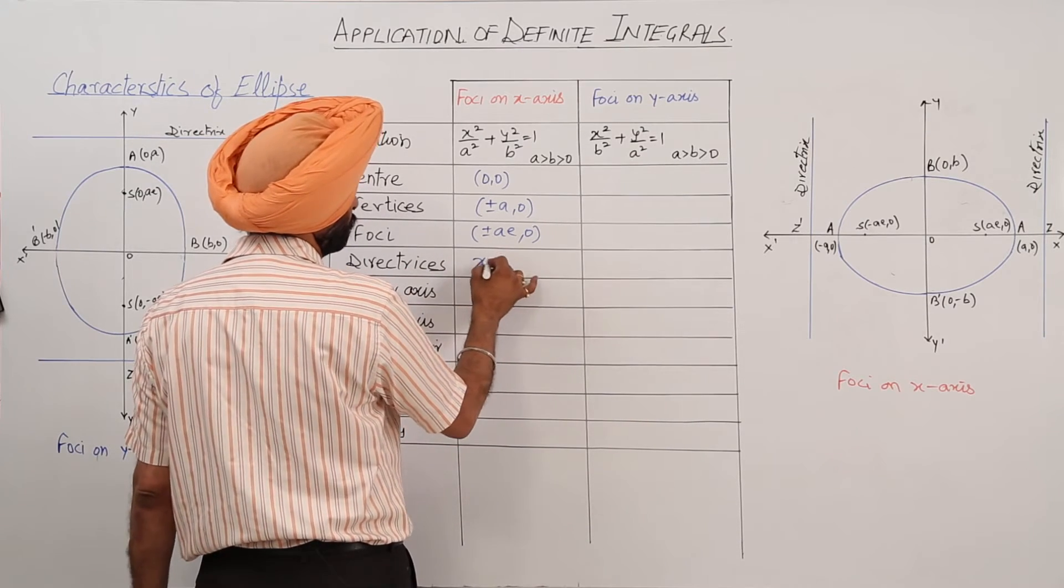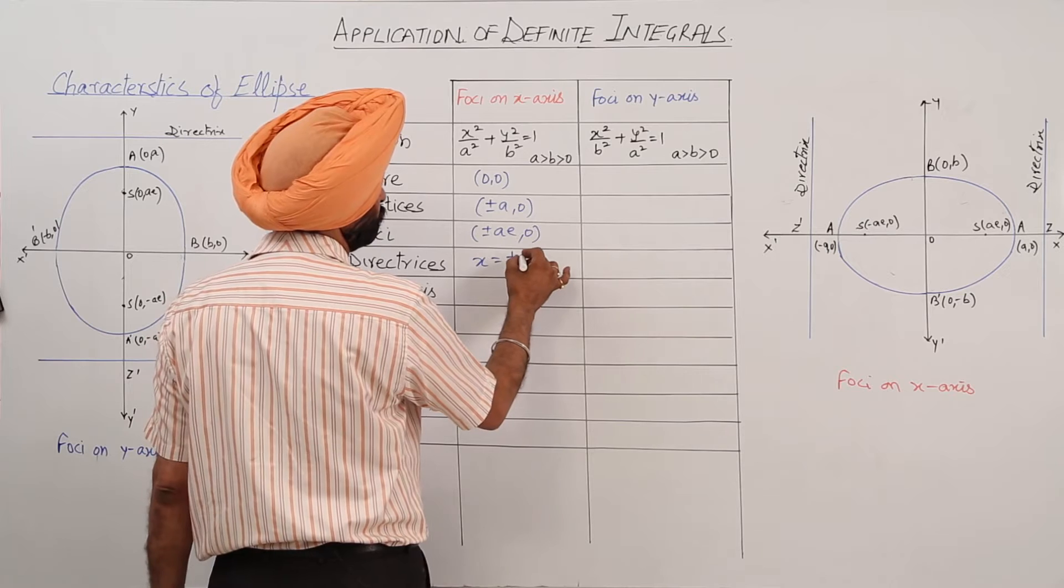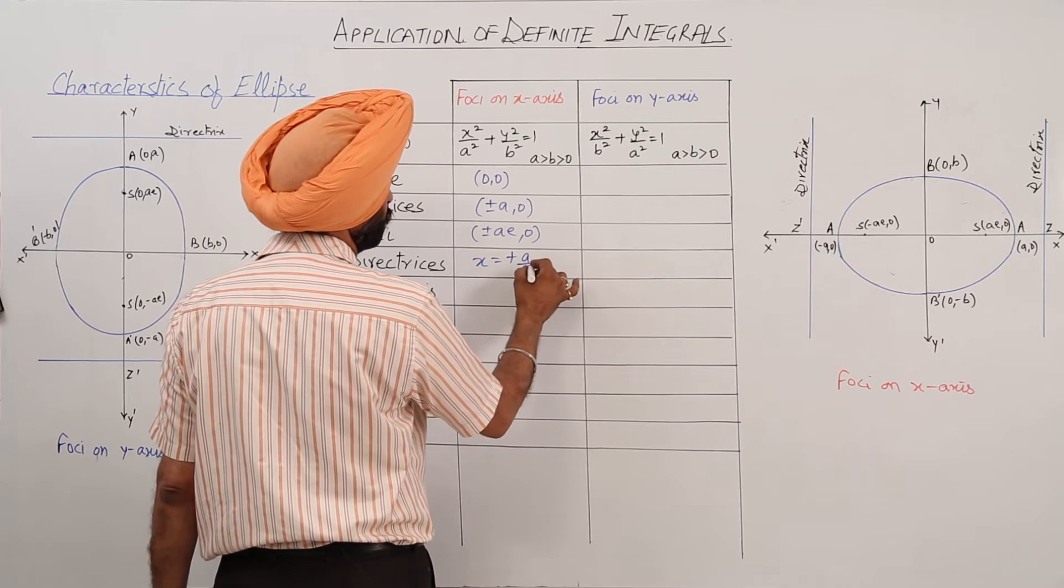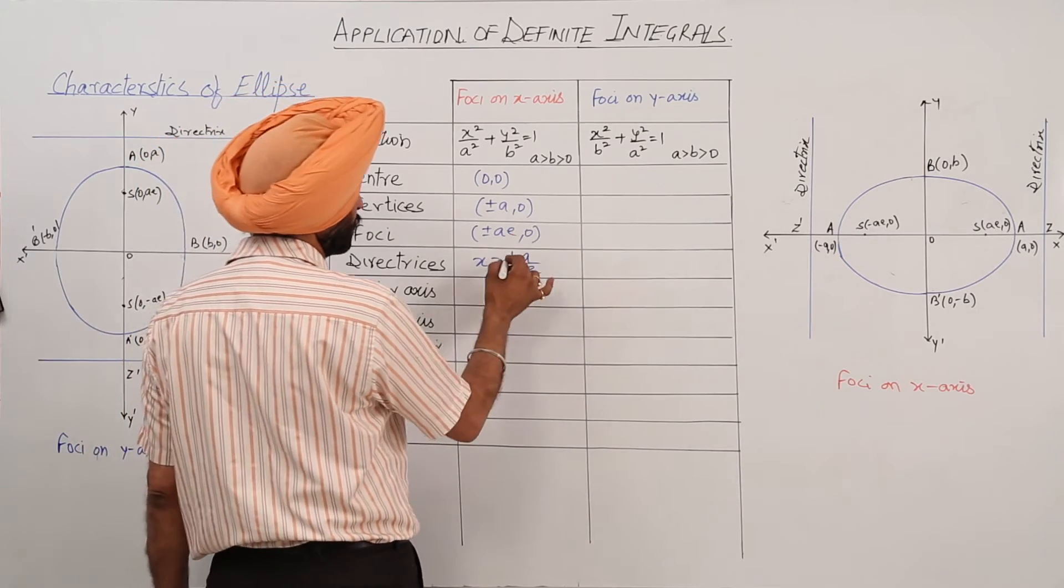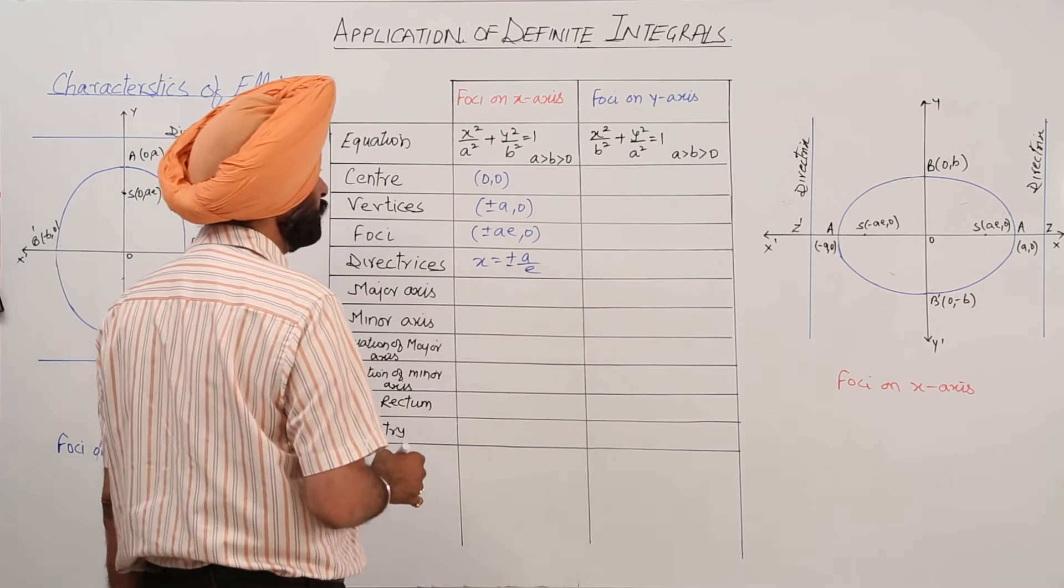Directrix: x is equal to plus a upon e. X is equal to—directrix both sides—plus minus a upon e.